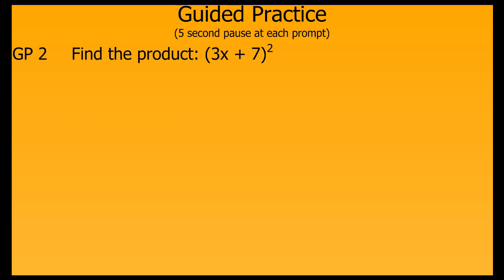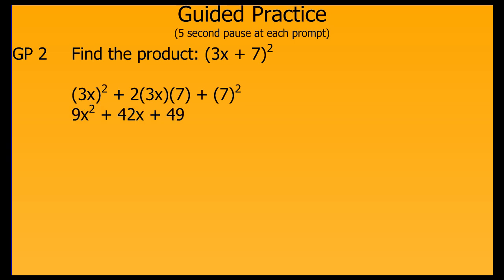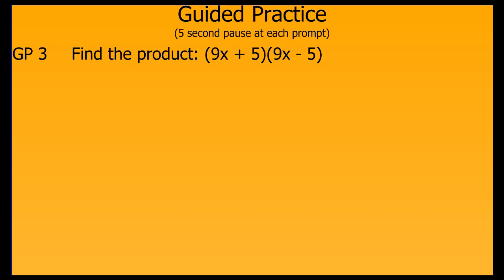Let's try another one. Again, we follow our pattern — first term squared, twice the product of the first and second term, and the second term squared. Now we simplify. This is our final answer. On the next one, we hopefully recognize it as a sum and difference problem. For a sum and difference problem, we take the first term squared and the second term squared, then subtract them. Then we simplify.